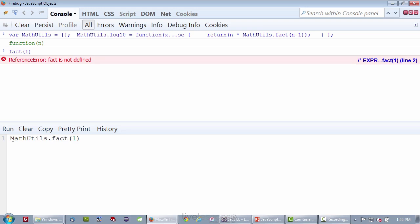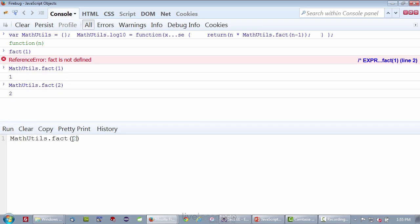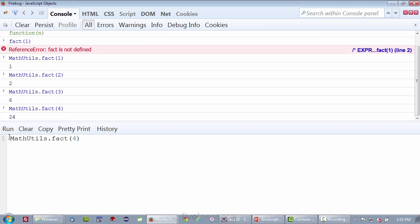So they're still a regular function, they just have dots in their name. Factorial of 1 is 1, factorial of 2 is 2, factorial of 3 should be 6, factorial of 4 should be 6 times 4, 24, and so forth.